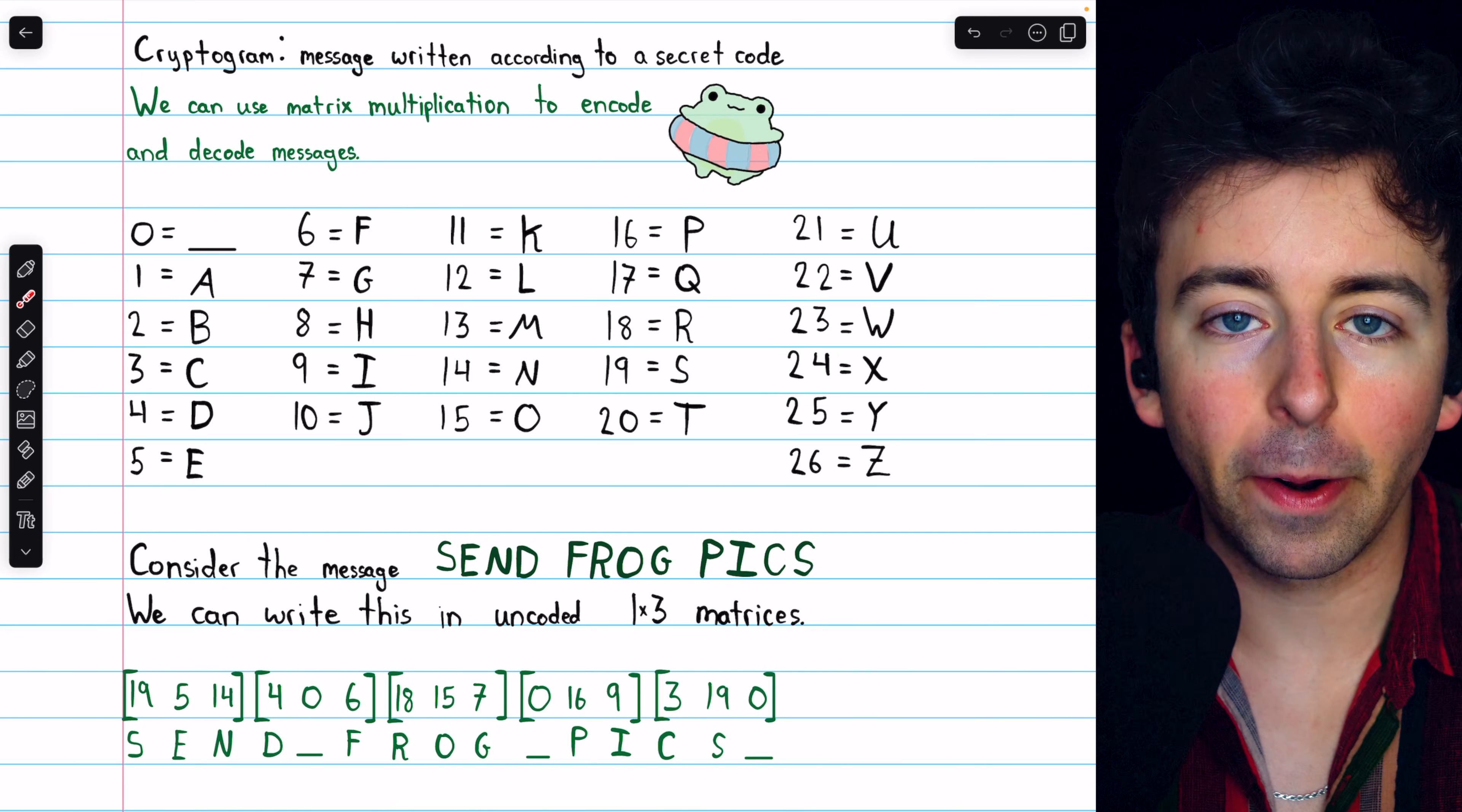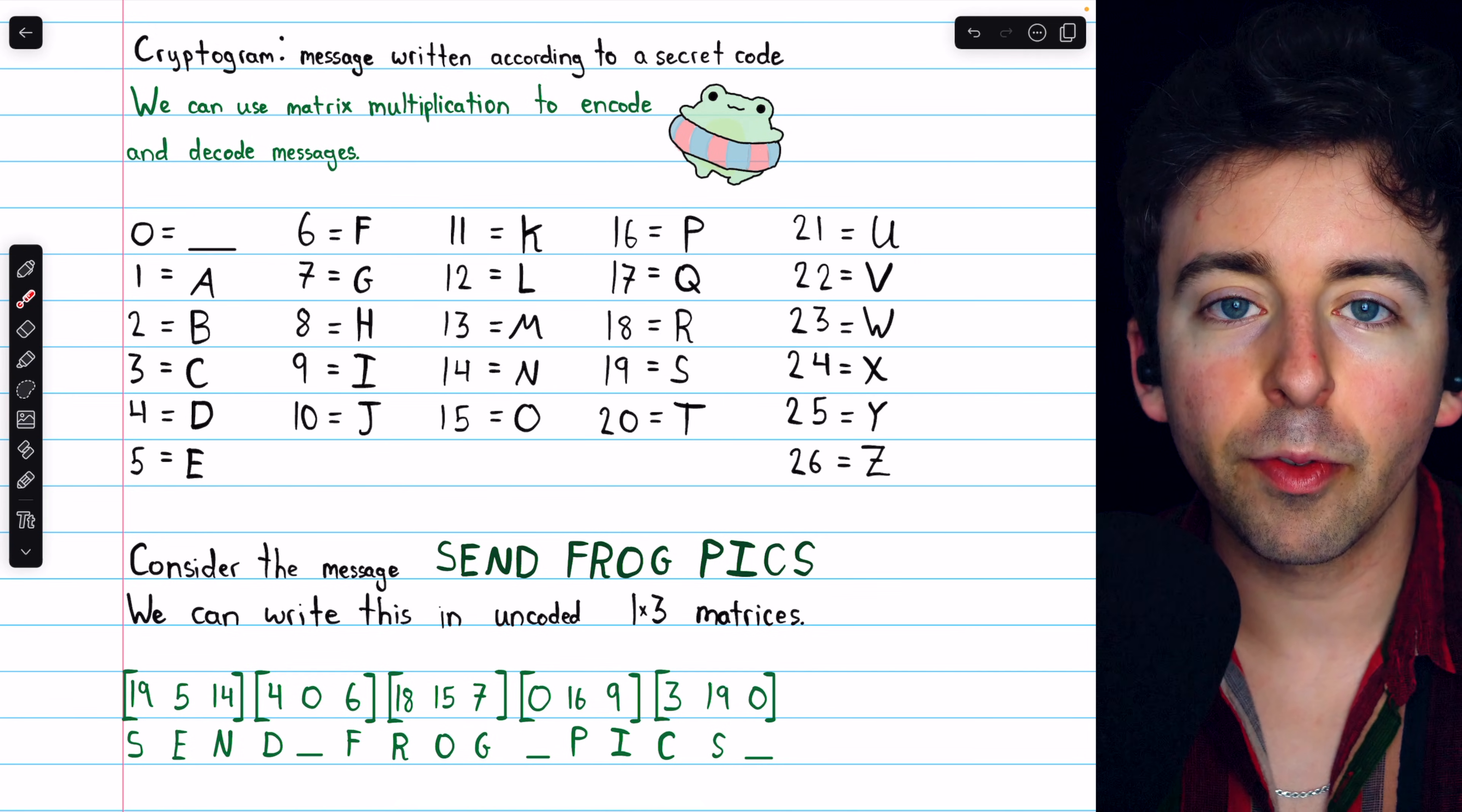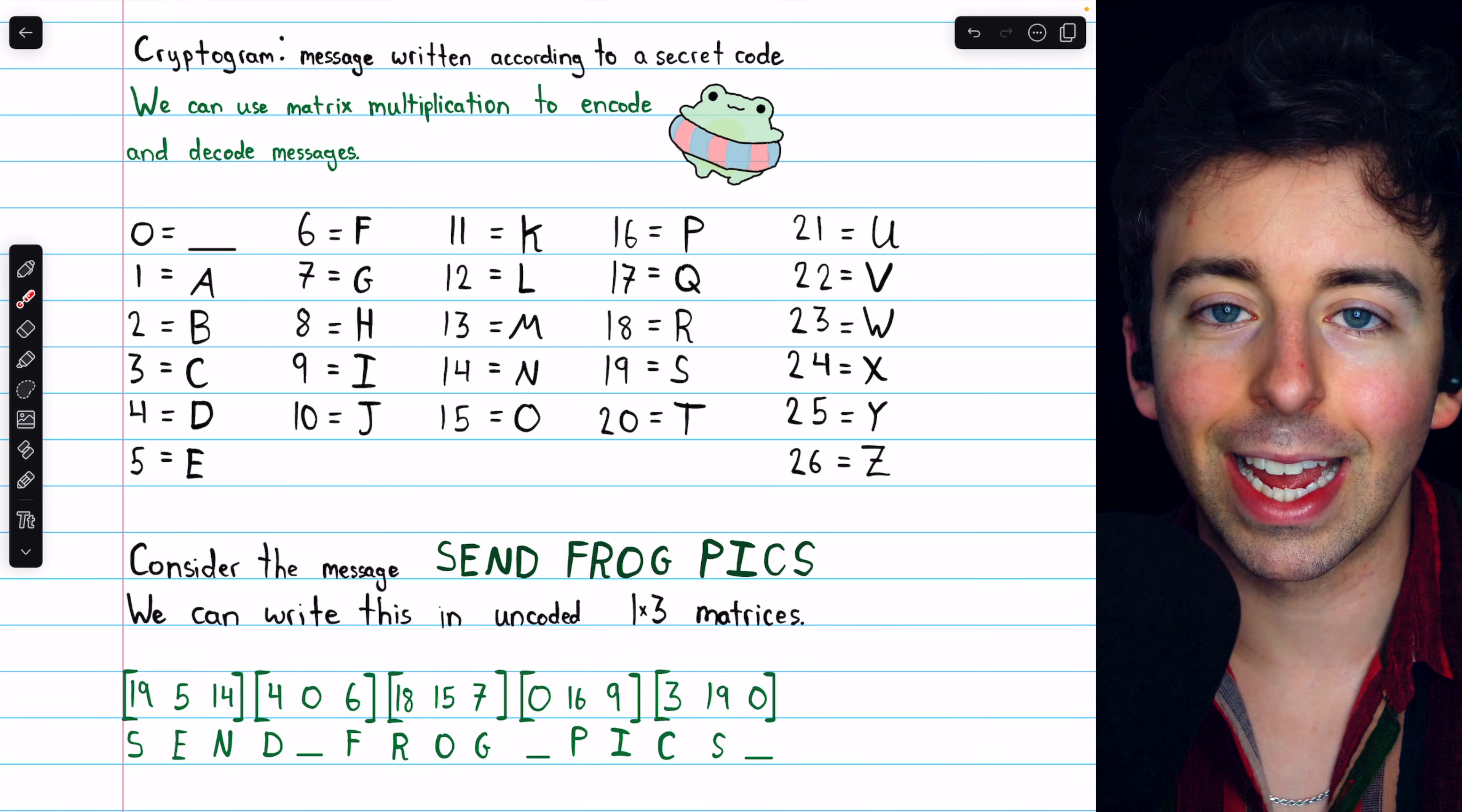Then we move on to the next three characters, and represent those in a separate 1x3 matrix. We have the letter D, and then we have a space, so we have the number 0 for that. And then we start the word frog, so we have F, which is a 6. We continue in this manner until the entire message is represented in these uncoded 1x3 matrices. Notice that in the last one, we have an empty entry that we just have to fill with a 0, representing a blank space.